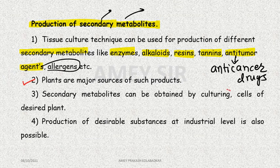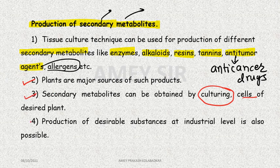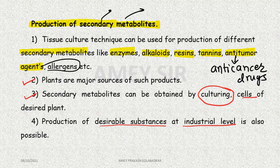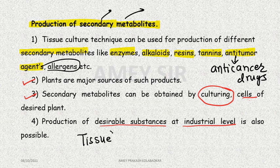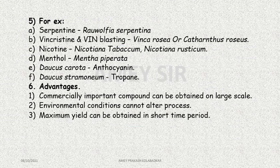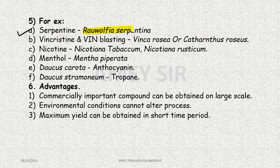These can be produced either by culturing cells of the desired plant, or by extracting from the entire plant. Industrial-level production of desirable substances is possible through tissue culture without using the entire plant — we use only the tissue of the plant, so the plant is saved and the product is also obtained. One example is Serpentine from Rauwolfia serpentina, which is used for snake bite. This plant is an endangered species.